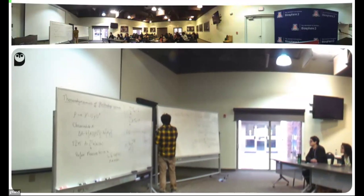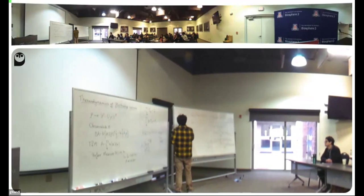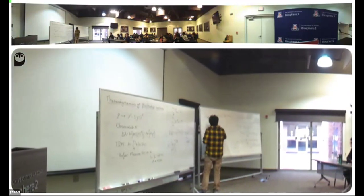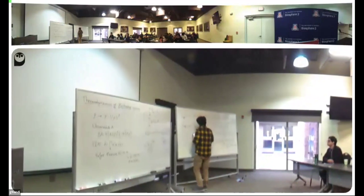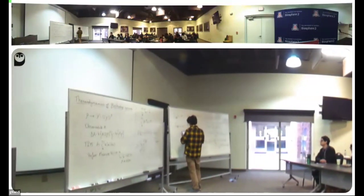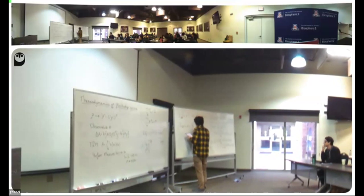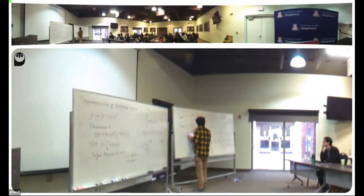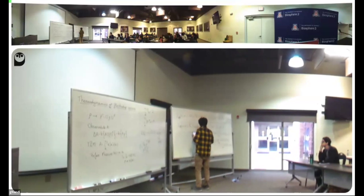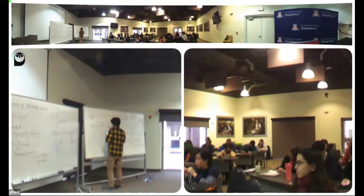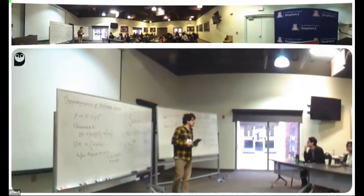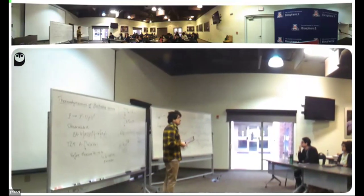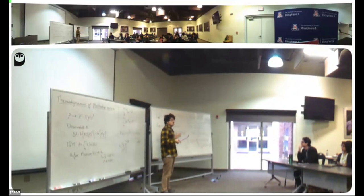You can take the real part and define a new probability — the Margenau-Hill probability — which is just the real part of the Kirkwood-Dirac distribution. This can also be written as one-half trace of [U† Π_{a′} U, Π_a]_+ · ρ, where the anti-commutator is AB + BA. Again, this might seem to solve the problem since it's real, but it turns out it can be negative.